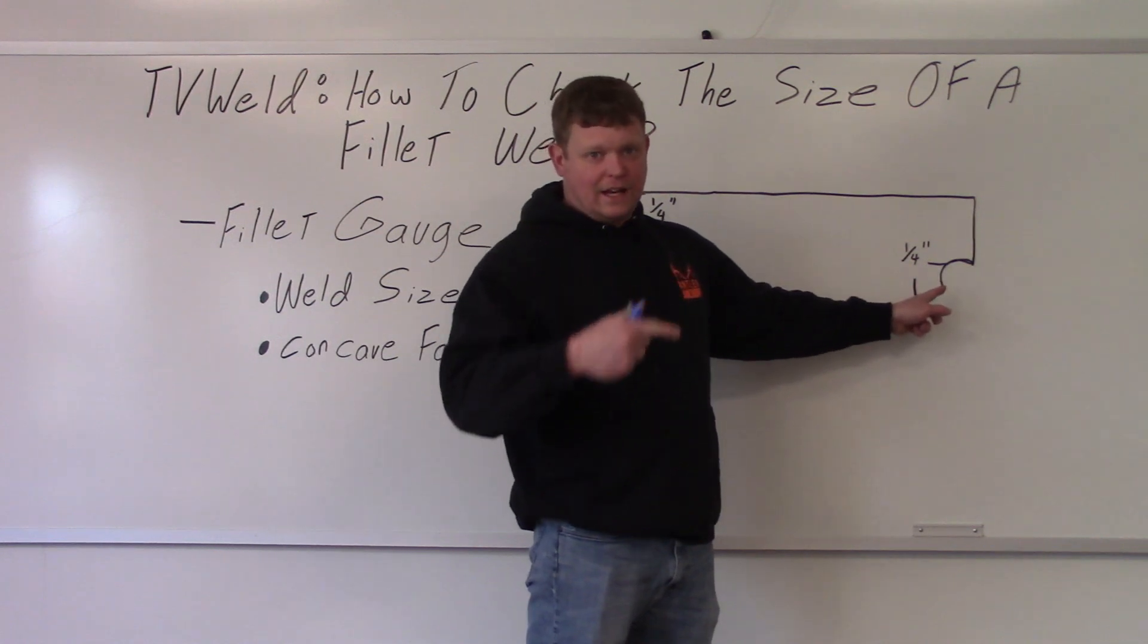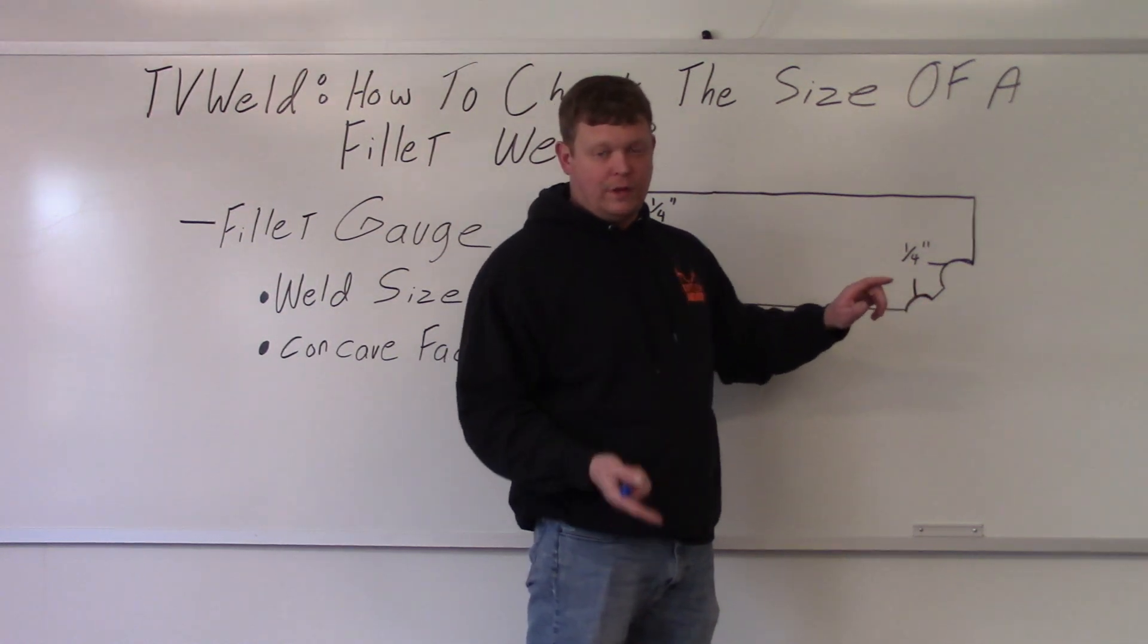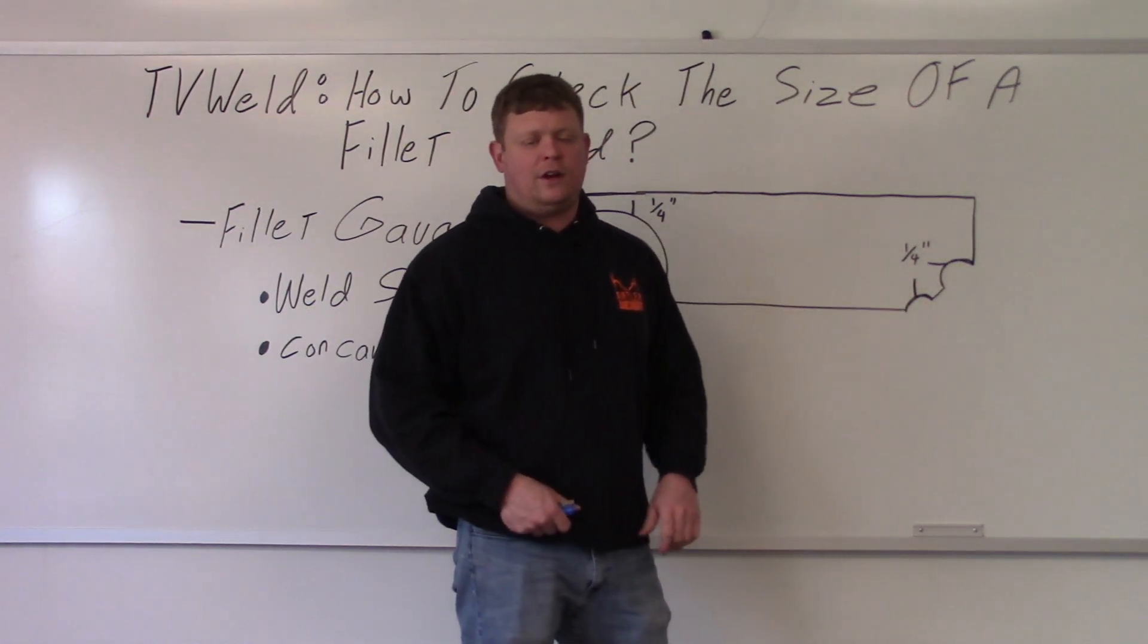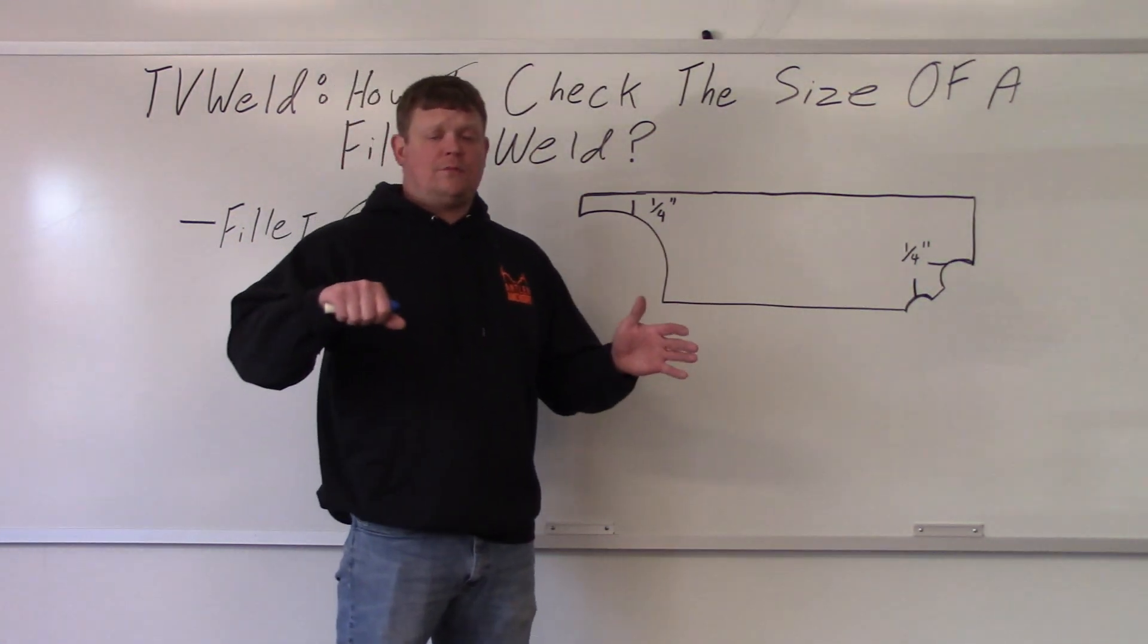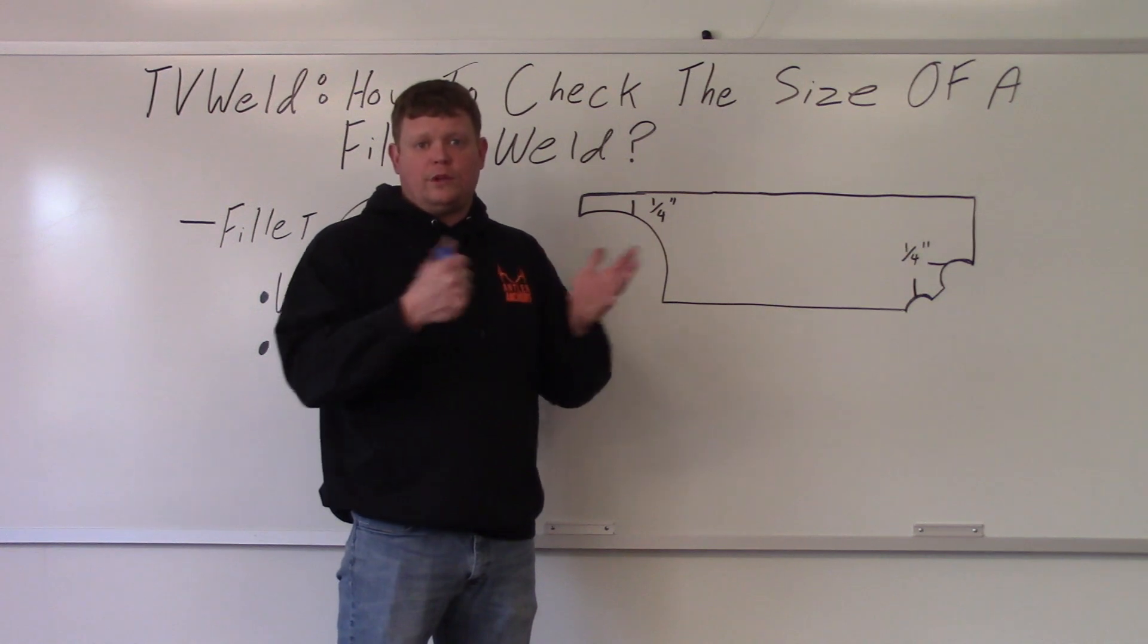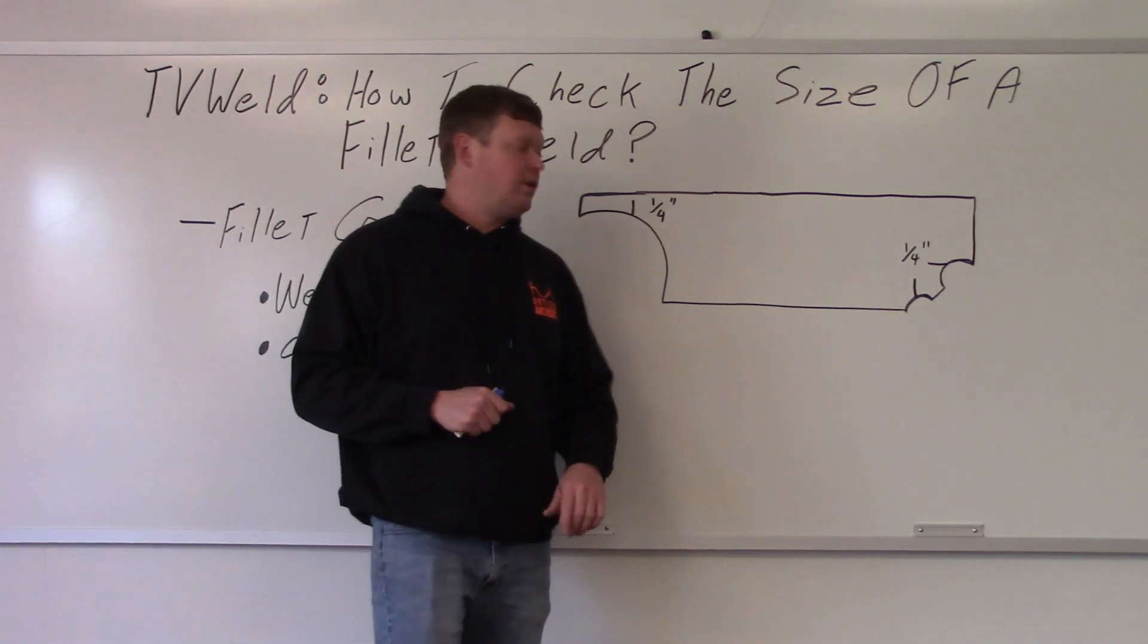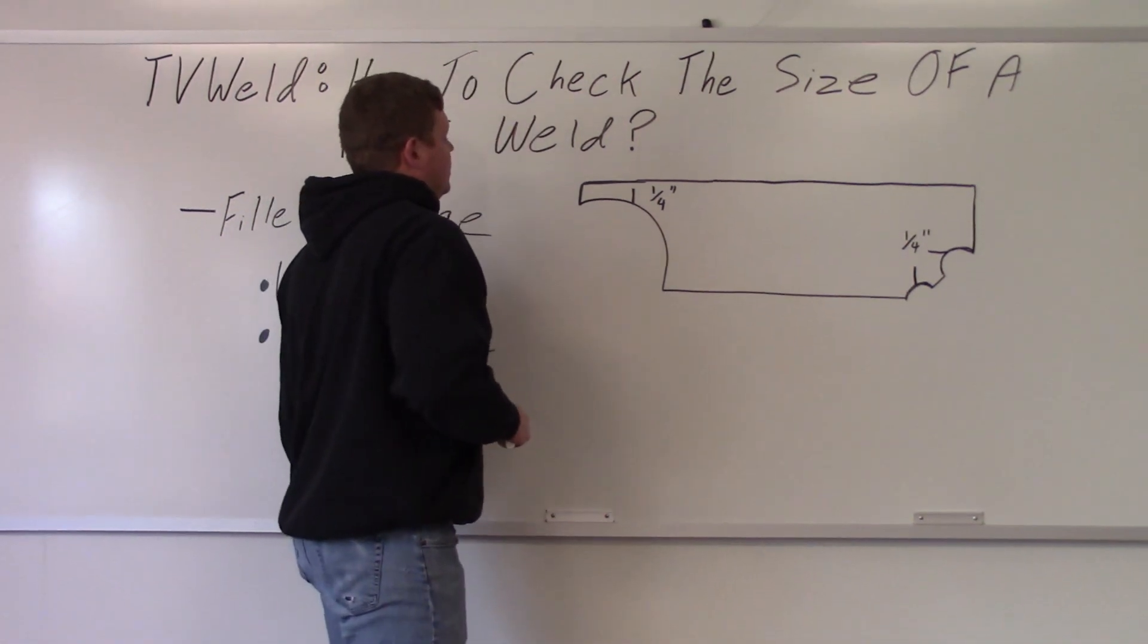If it doesn't hit, that means it's concave. Which means it's going in a little bit. And that's generally an undesirable trait of a fillet weld is to have a concave finish. Unless you had something that was butting up to it or something where you didn't want it to hit the actual fillet weld.